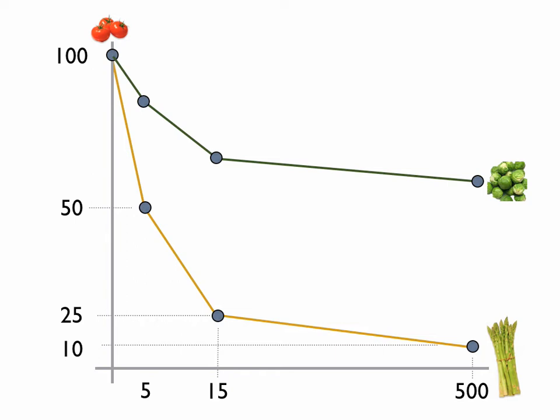Here are two different indifference curves. One represents the trade of tomatoes and asparagus, and one represents the trade between tomatoes and brussel sprouts. Clearly, the person prefers asparagus to brussel sprouts, because if you go down the indifference curve — which is kind of a tan color — you'll see that they're willing to continue to trade tomatoes for asparagus along the way. But with the brussel sprout curve, they're not willing to trade any more tomatoes at some point for any more brussel sprouts.